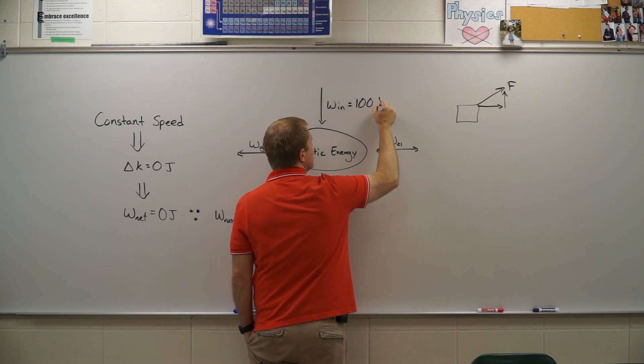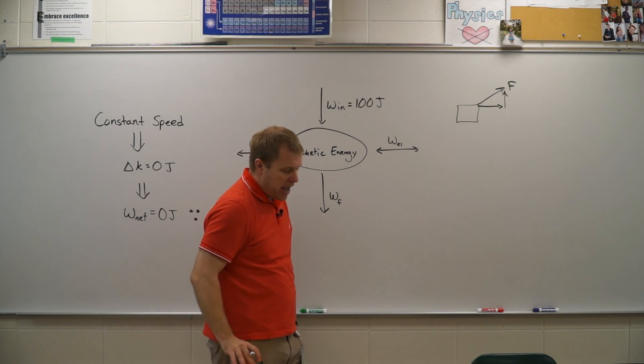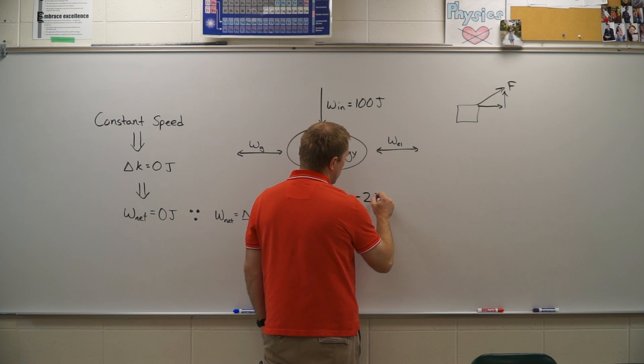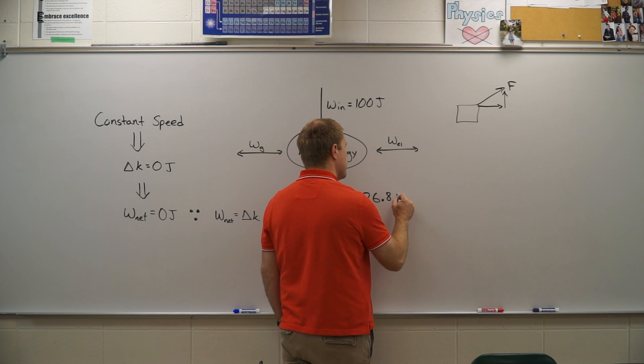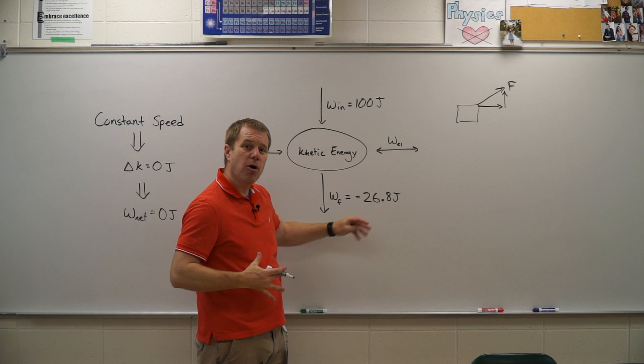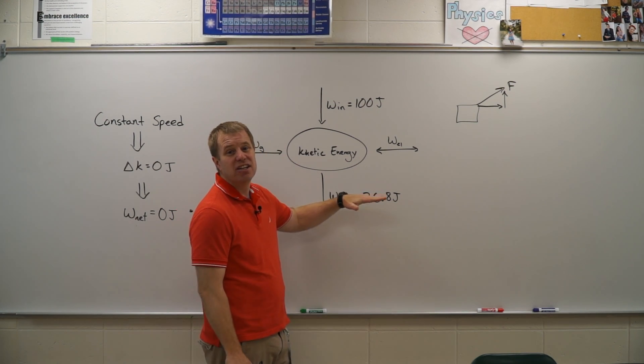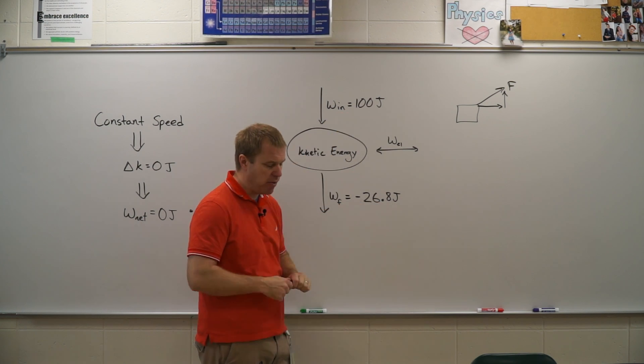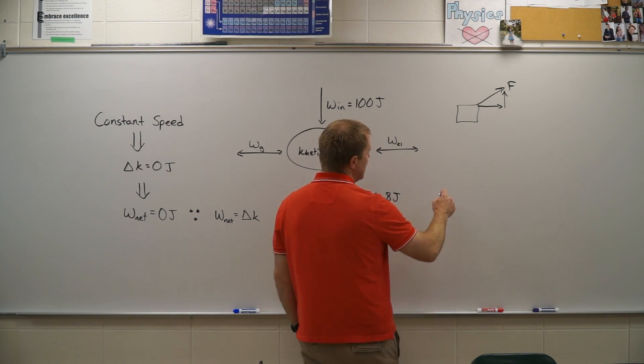And so it turns out that 100 joules of work is done by our applied force, and friction does a negative 26.8 joules of work. Okay, so we have some energy going in, some energy going out, but there's a net amount of energy gained. So we have 100 going in, 26 going out, that means we have an overall gain of 73.